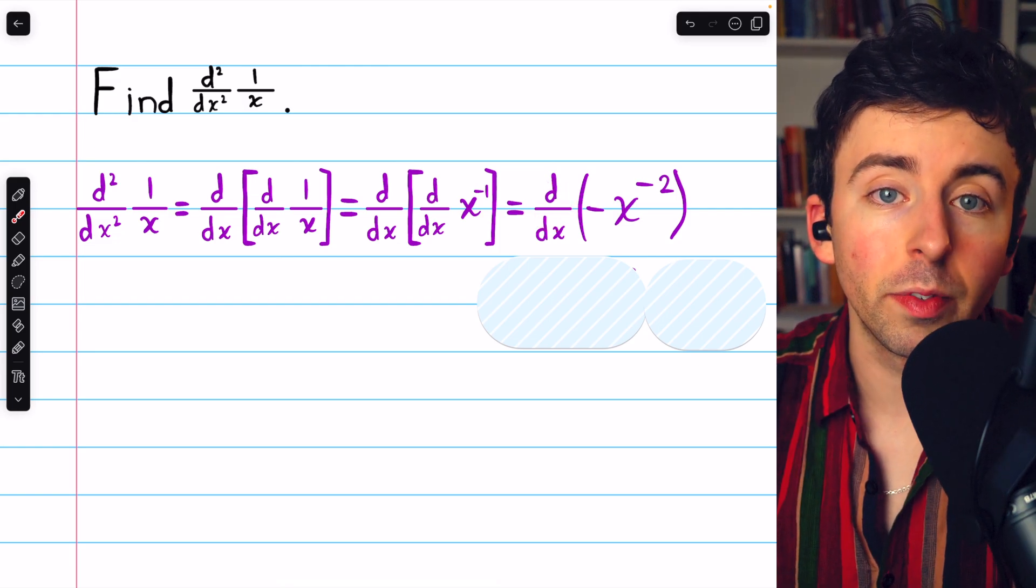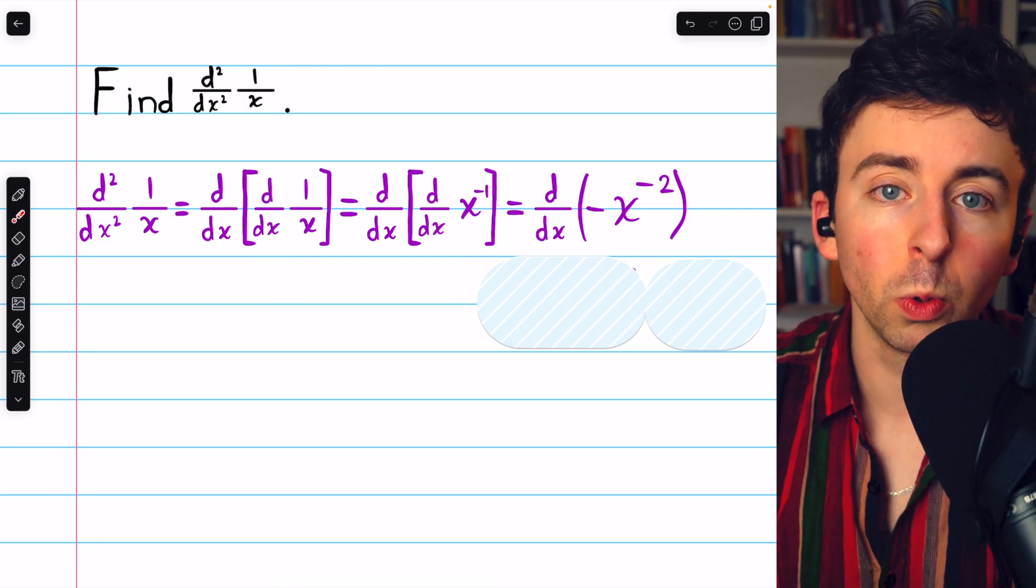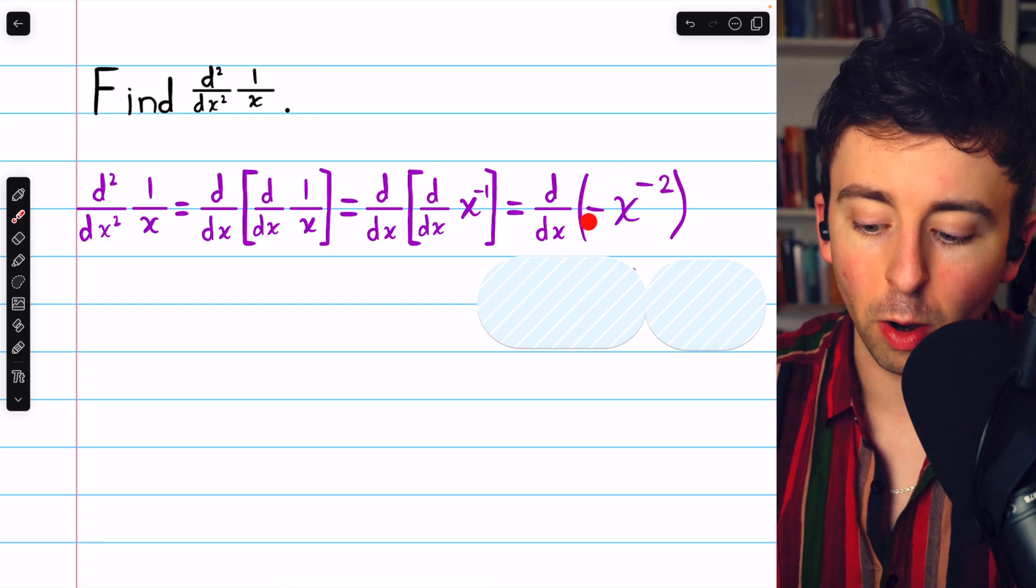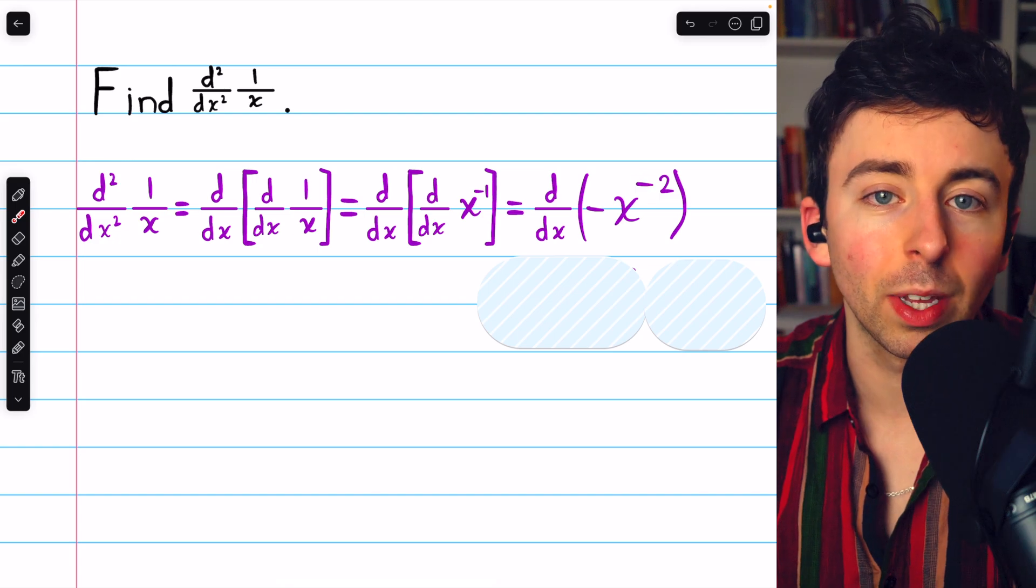To take the second derivative, well, we just use the power rule again. That means the power of negative 2 will come in front as a factor. There's already a negative, so the negatives will cancel out.